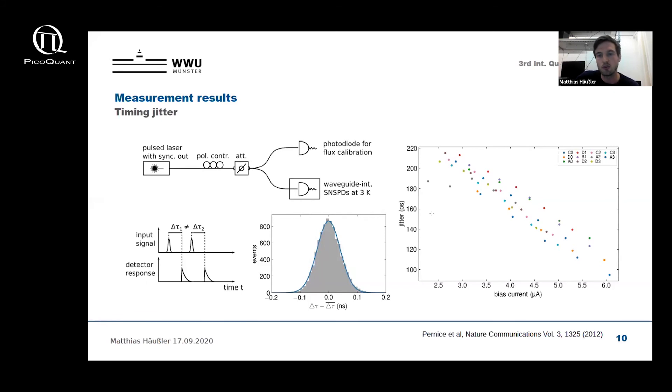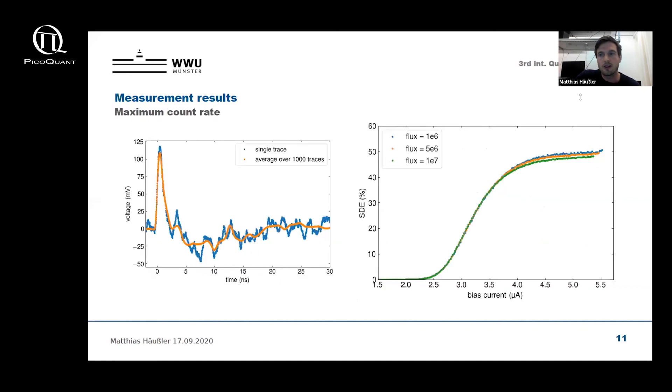Now that we have talked about the efficiency and the jitter, I would like to finally discuss the maximum count rate. The maximum count rate is basically limited by the reset time of the nanowire, however also the readout circuit including the amplifier strongly influences the maximum count rate. On the left side you can see, for example, a voltage spike generated by the system if a single photon is absorbed. On the right side you can now see how the detection efficiency versus the bias current changes with the number of incoming photons.